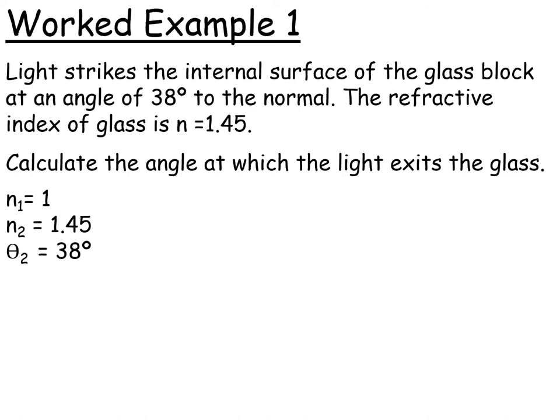So when we do a KFC, we've got the following: Theta 2 is 38 degrees, n2 is the refractive index of the glass, and n1 is the refractive index of air. And so we're asked to find theta 1, which is the angle at which the light exits the glass. Now that's the trick to that question. So be very clear in your head about what theta 1 and theta 2 means.